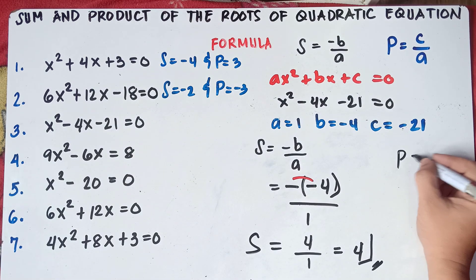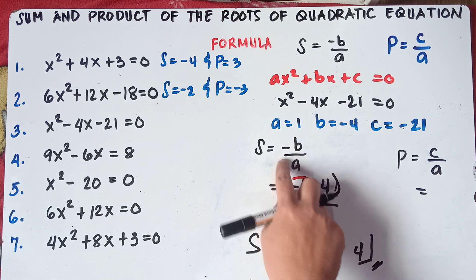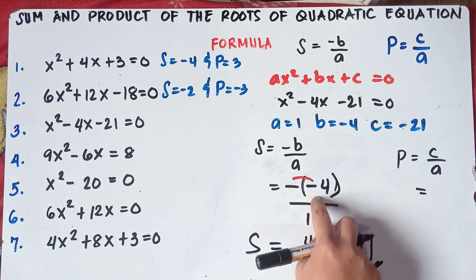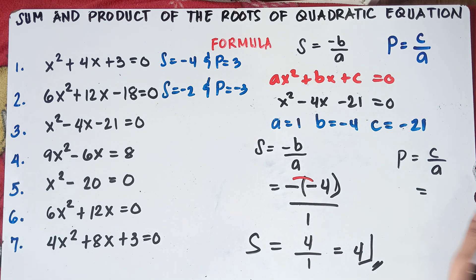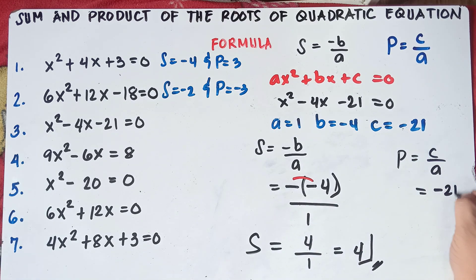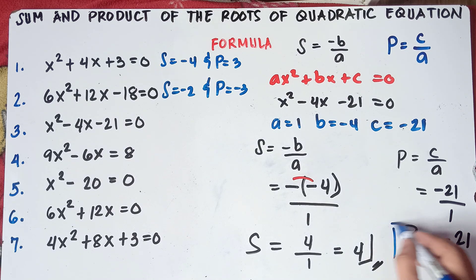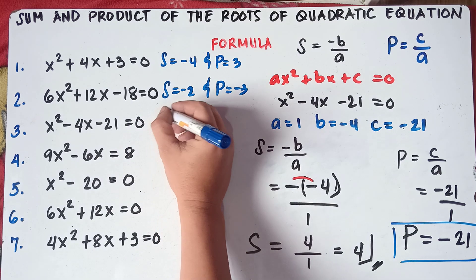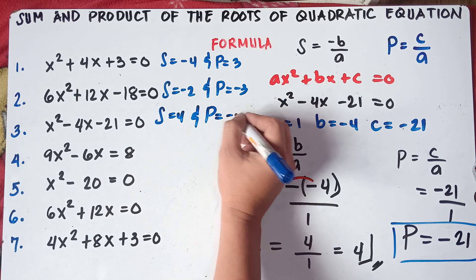For the product, C over A: C is negative 21 and A is positive 1. Negative divided by positive is negative. 21 divided by 1 is 21. So the product is negative 21. The sum is 4 and the product is negative 21.